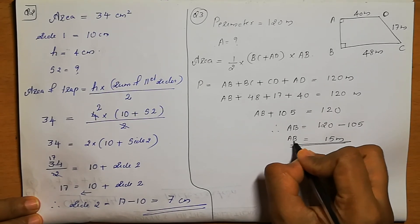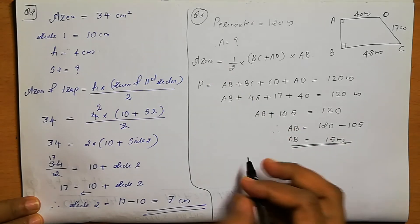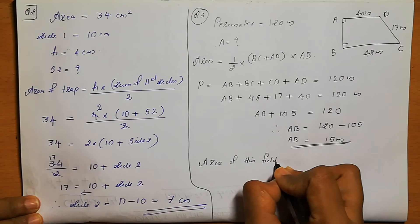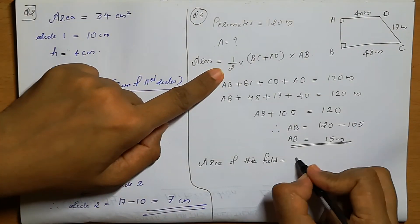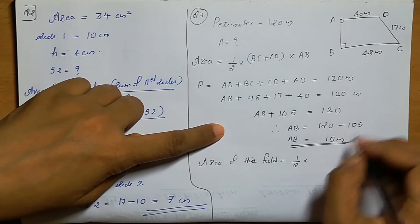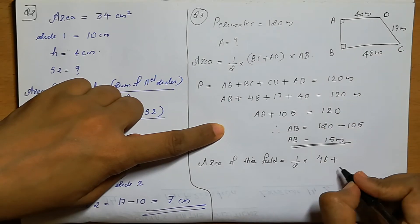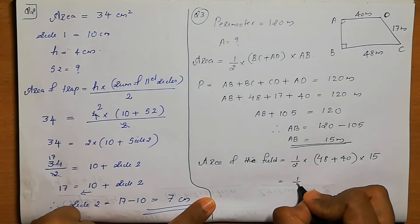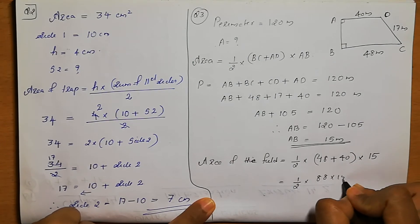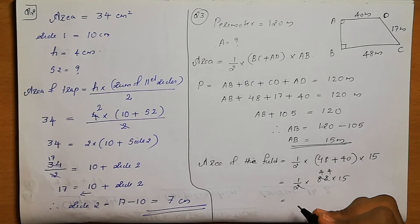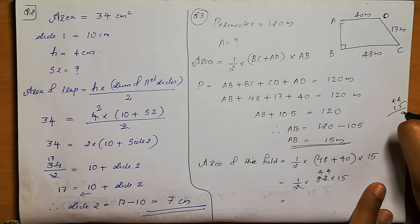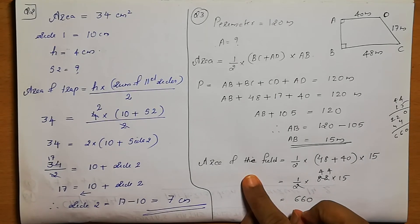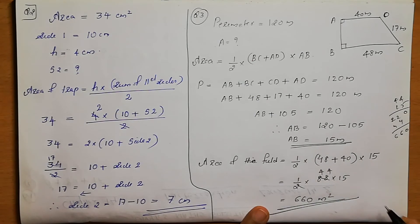Area of the trapezium-shaped field = half into (BC + AD) into AB = half into (48 + 40) into 15 = half into 88 into 15 = 44 into 15 = 660. The unit is meter square, so the area of the trapezium-shaped field is 660 meter square.